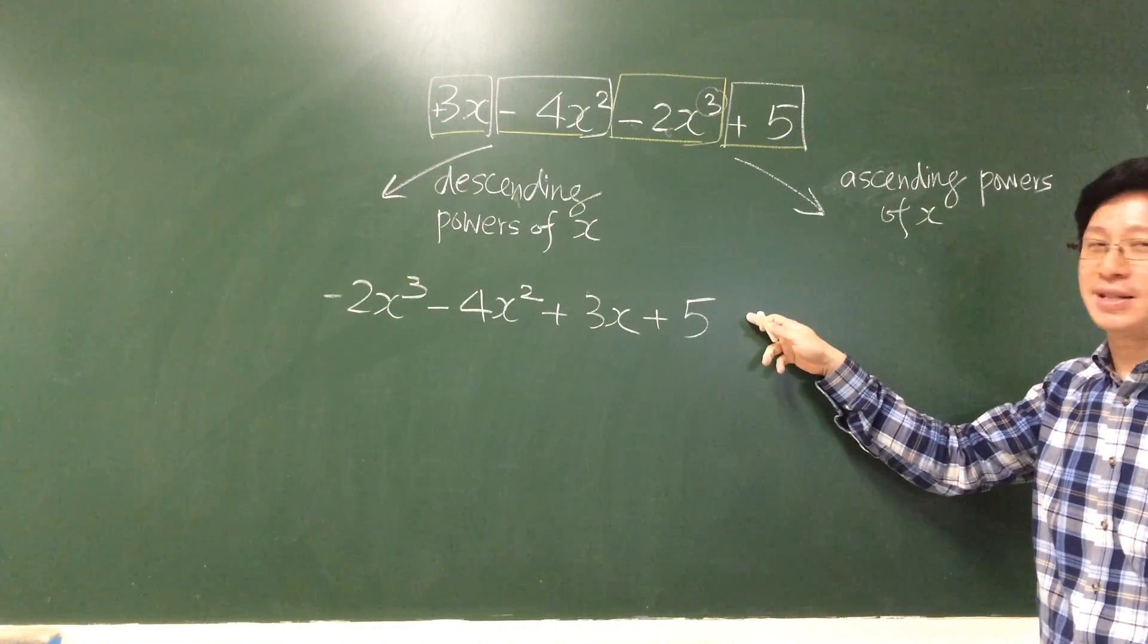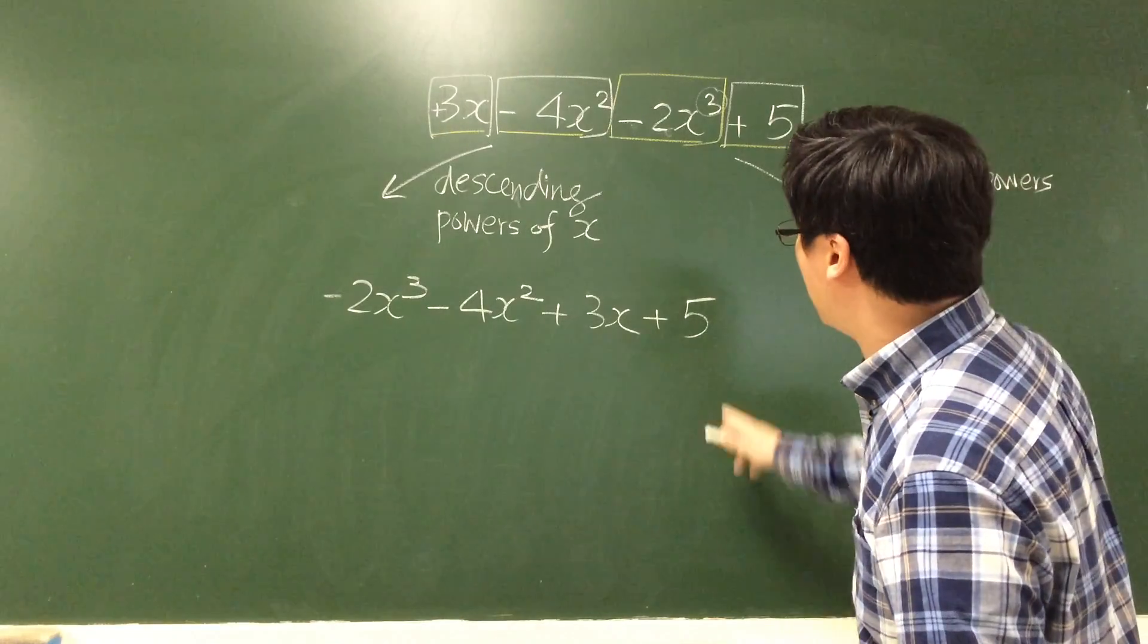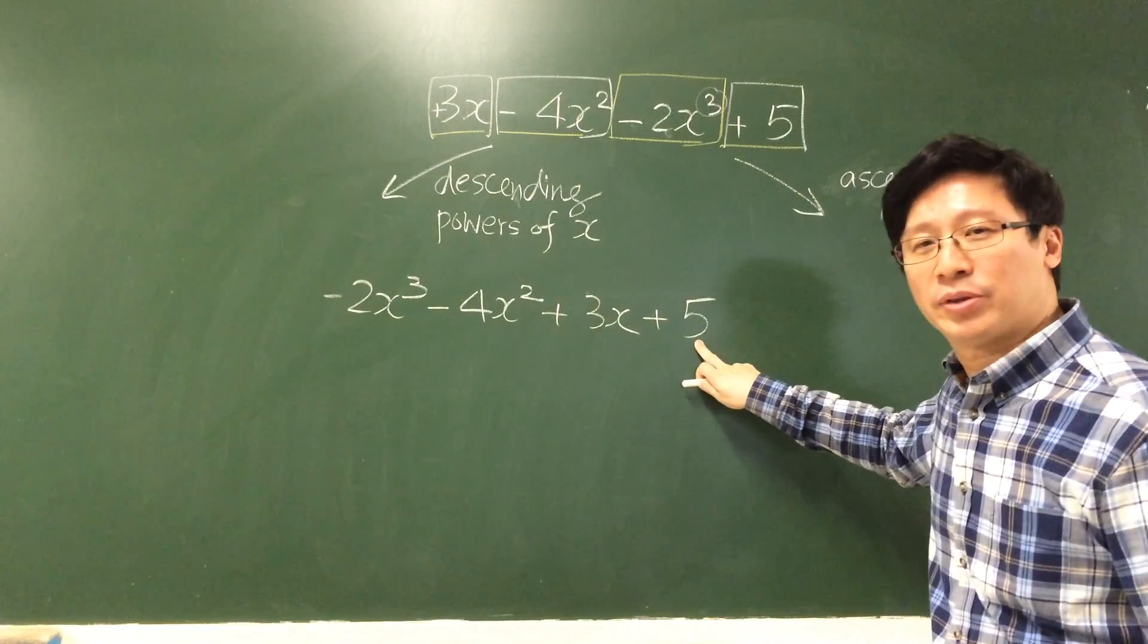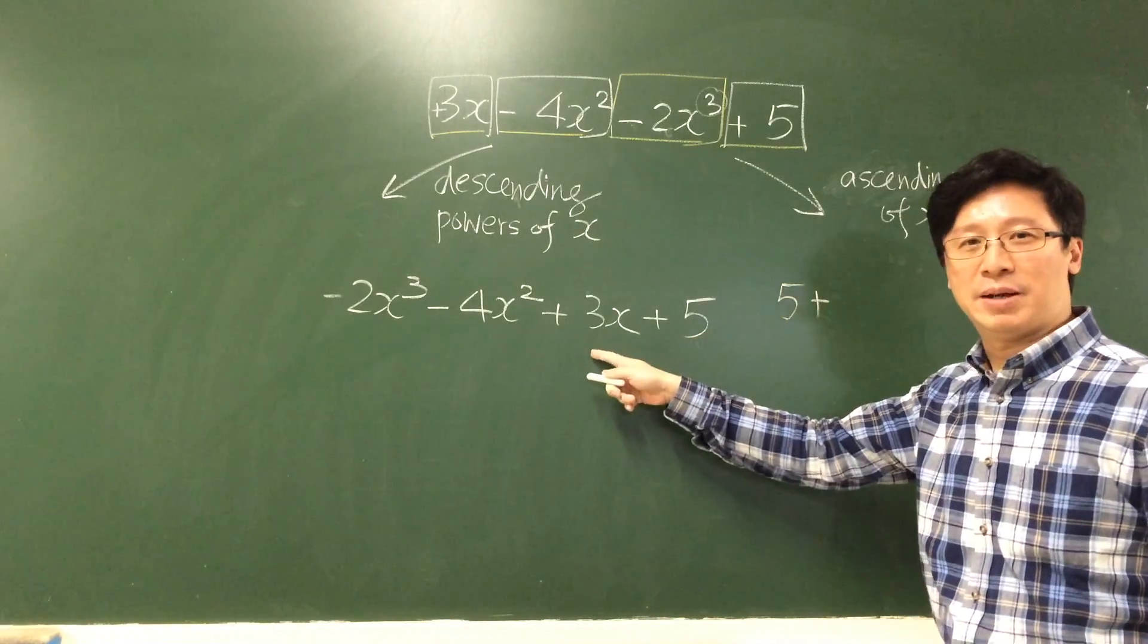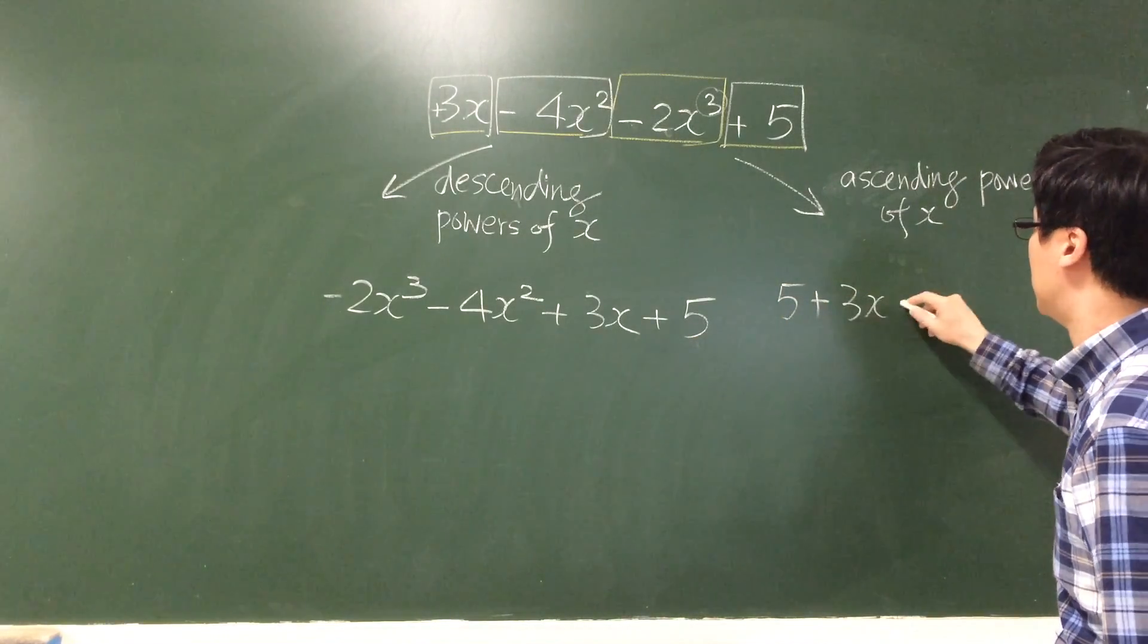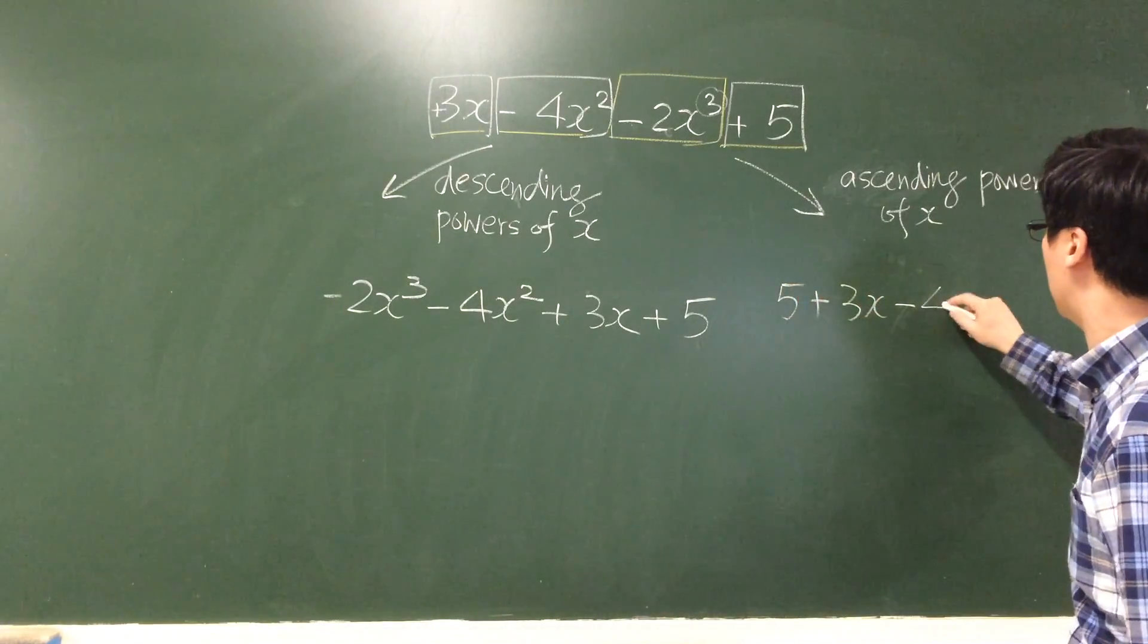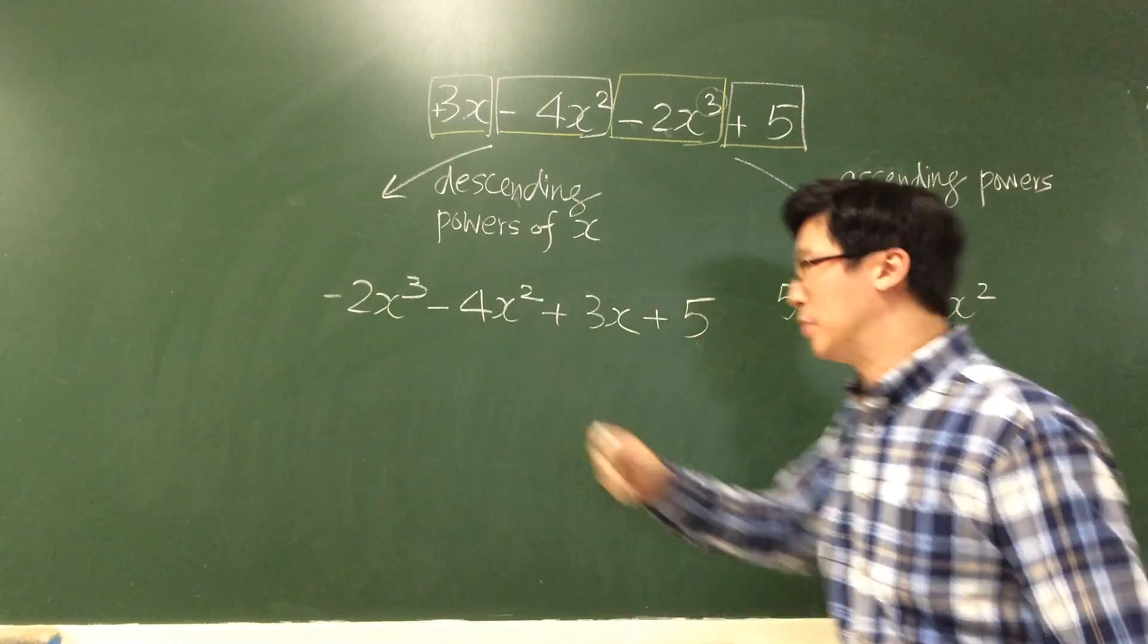That means we start from the plus 5 here: 5, then plus 3x, minus 4x squared, minus 2x cubed.